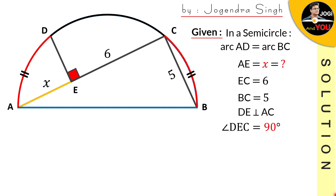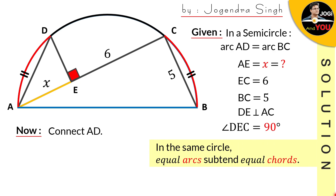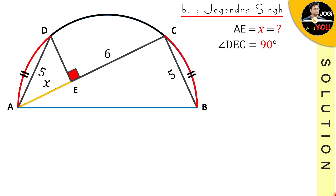At first glance the information seems a little less for solving, so what do we do? To those who have already solved it — hats off to them. And those who couldn't solve it, there is absolutely no need to be demotivated because the question is quite typical. To solve this, first of all connect AD. We have connected AD, and after connecting them, we have a property: in the same circle, equal arcs subtend equal chords. So because our arcs are equal, their chords will also be equal — the right side value is 5 so the left side will also be 5.